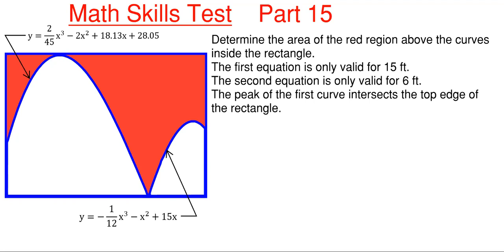This will be the 15th part in our series. What we have to do is determine the area of the red region above these two curves shown here. We are told that the outline shape is a rectangle. The first equation is only valid for 15 feet — from this point to this point. The second equation shown down here will only be valid for six feet. The peak of the first curve intersects the top edge of the rectangle.